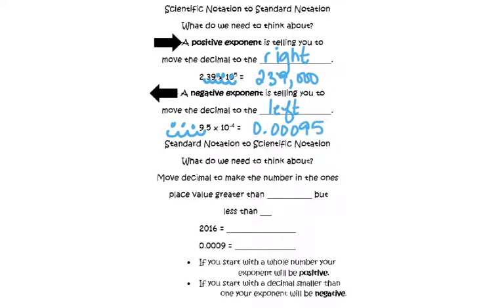Standard notation to scientific notation – what do we need to think about? Move decimal to make the number in the one's place value greater than 1, but less than 10.